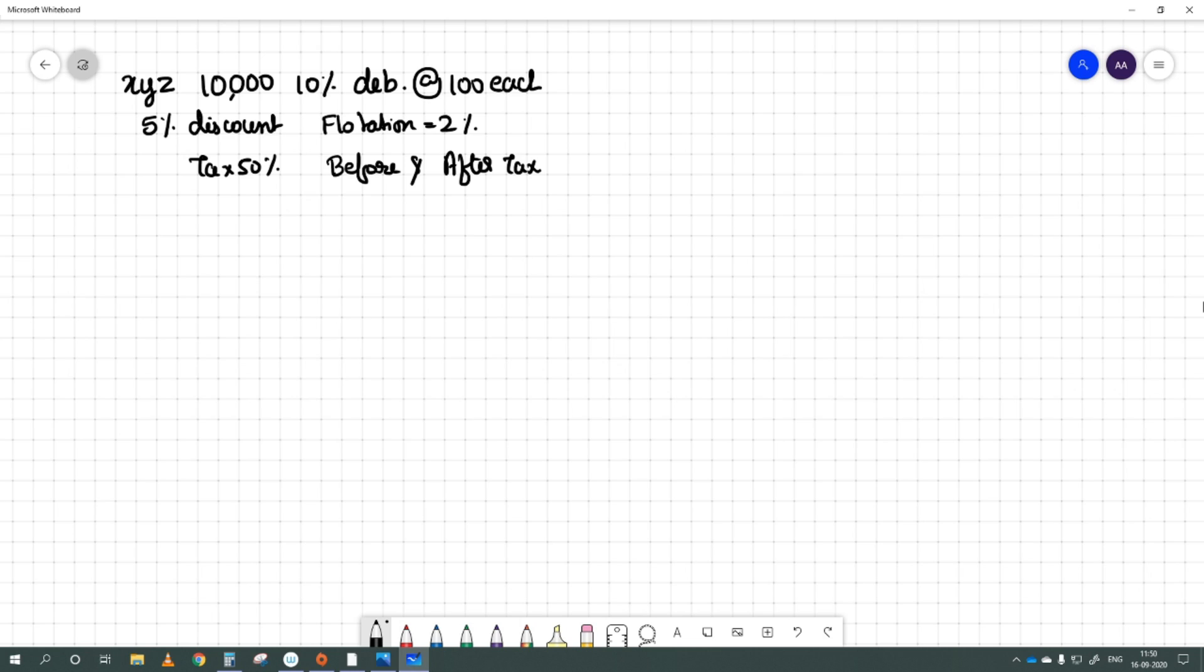I hope the handwriting is clear. This is a simple and direct question. Let us start. First we do the working note. Working note will be very useful. The formula I'll write in red pen: KD before tax equals I upon net proceeds into 100. BT here is before tax, please note down.